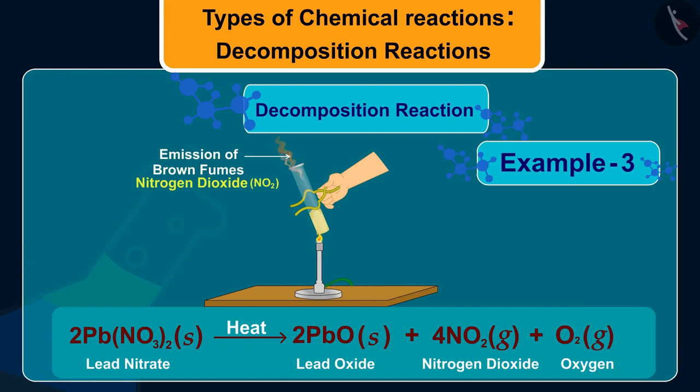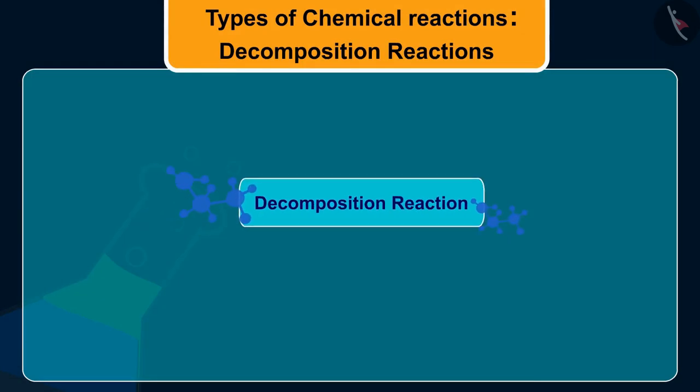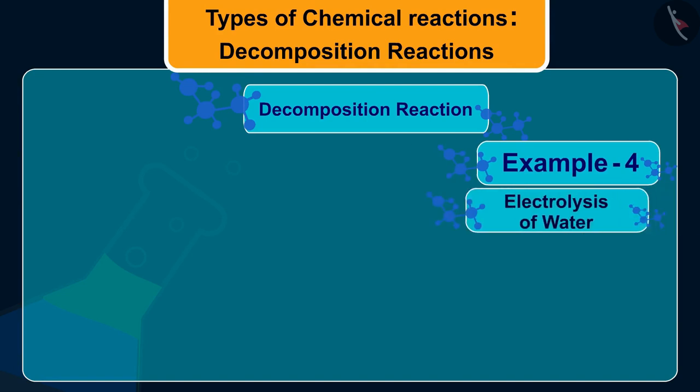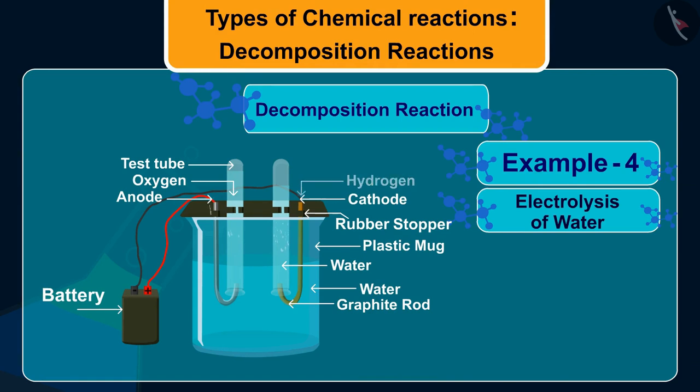Friends, let us discuss an interesting decomposition reaction which is electrolysis of water. Yes children, water can be broken down into H₂ and O₂ on passing an electric current through it. The chemical equation for this is 2H₂O results in 2H₂ plus O₂.